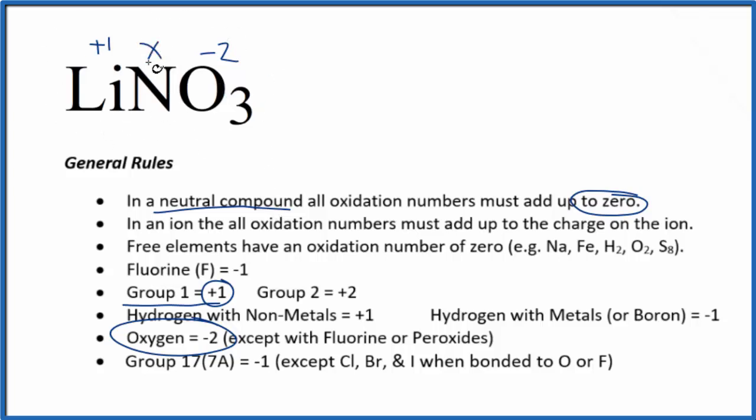So remember all of this is going to add up to zero. So we could set an equation up. One plus X, three times minus two is minus six, equals zero.